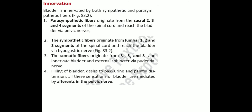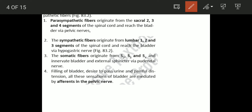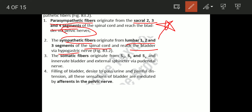Now the innervation: the bladder is innervated by both sympathetic and parasympathetic fibers. The parasympathetic fibers originate from sacral segments S2, S3, and S4 of the spinal cord and reach the bladder via the pelvic nerves. The sympathetic fibers originate from lumbar segments L1, L2, L3 and reach the bladder via the hypogastric nerve.